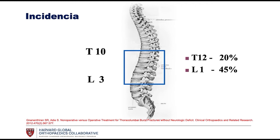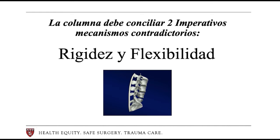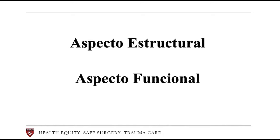As far as incidence, we know that these types of fractures occur more frequently between the T10 and L3 segments. We see that they occur most frequently between T12 and L1, accounting for 40 to 45% of the fractures in this segment. The spine must reconcile two imperative contradictory mechanisms: rigidity and flexibility. With this in mind, we always have to consider the structural and functional aspects of treating these types of patients.